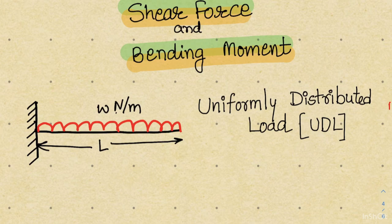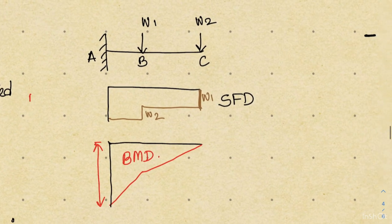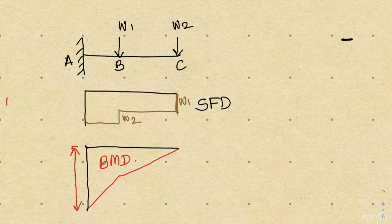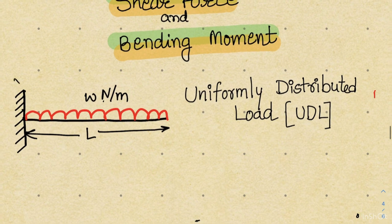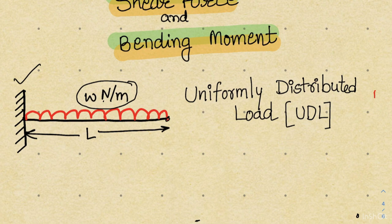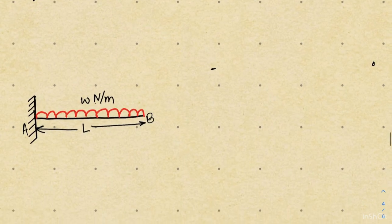Hello everyone and welcome back to this fourth class of shear force and bending moment diagram. In our previous classes we have seen how to make the shear force and bending moment diagram for a cantilever beam with one point load or multiple point loads. In this session we are going to introduce the uniformly distributed load. We will focus on the shear force diagram first, and later on we will see the bending moment.